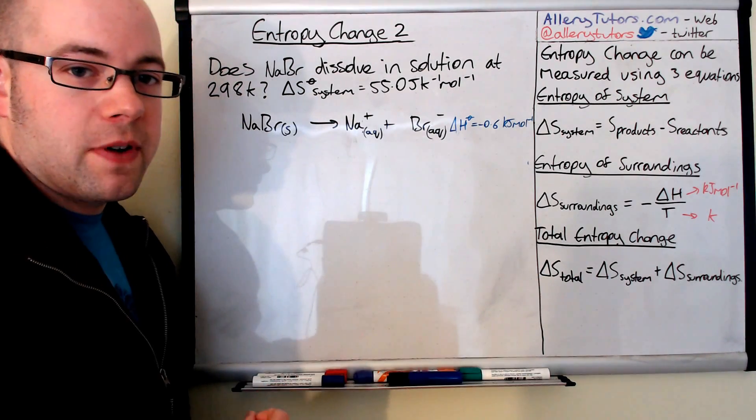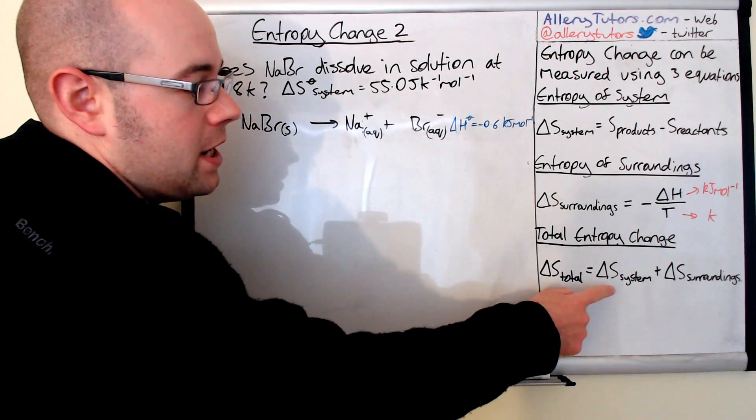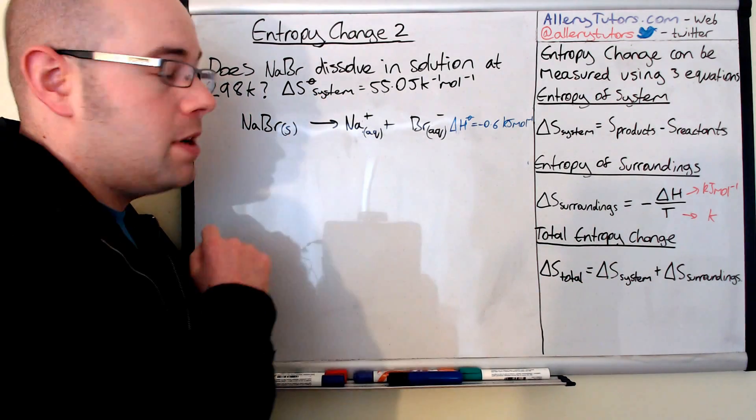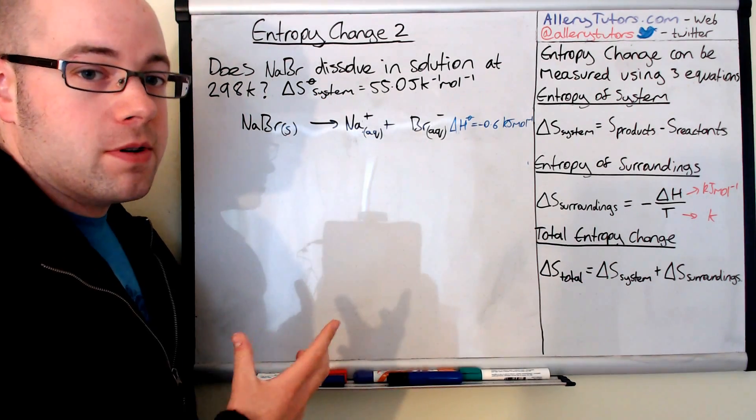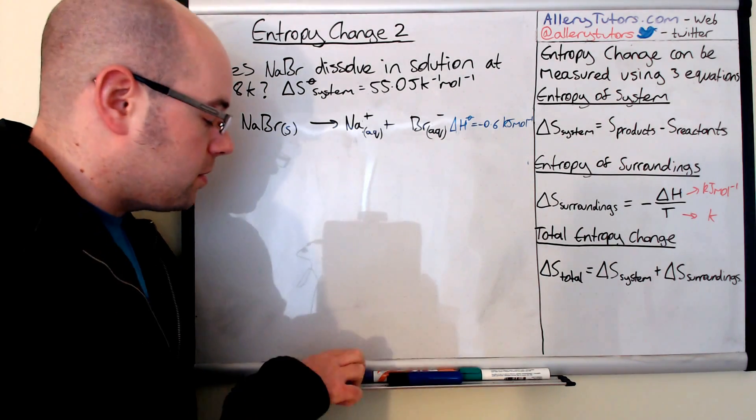This is the total entropy value that we need to work out. So the total entropy is system plus surroundings. We know the entropy of the system. We don't know the entropy of the surroundings. So that's what we'll have to work out first.